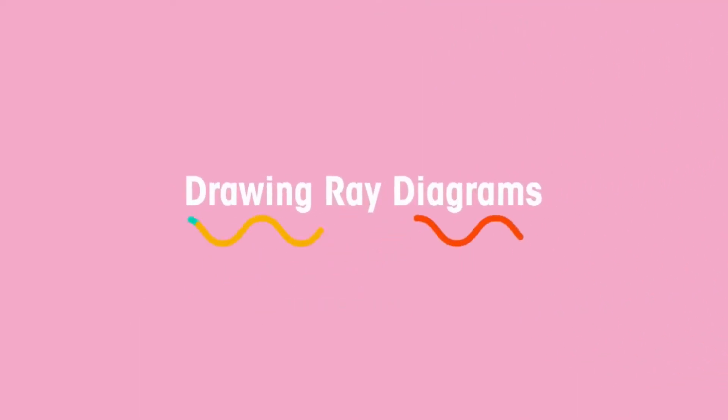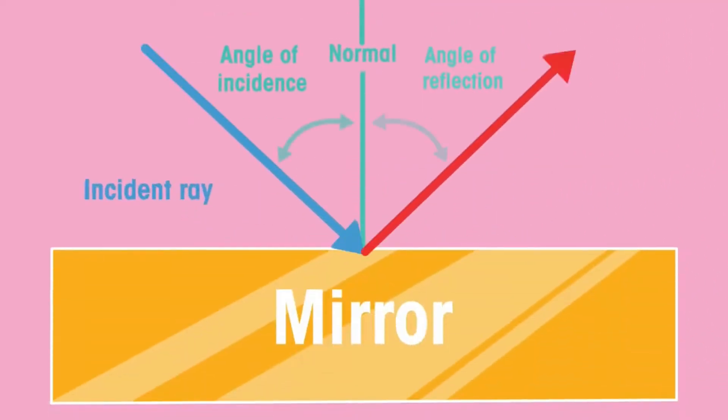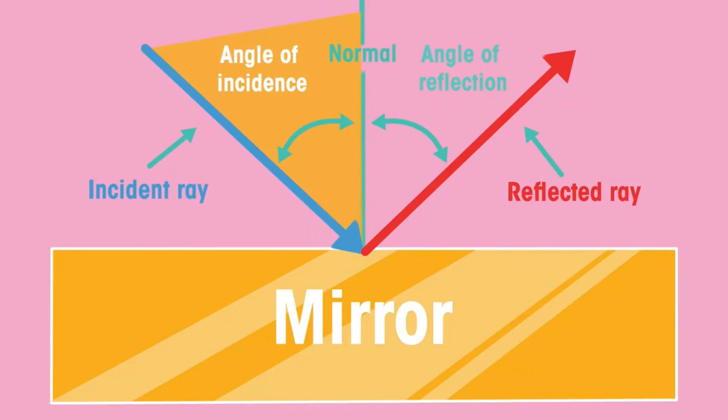When drawing ray diagrams the angle of incidence is always equal to the angle of reflection. The angle of incidence is the angle between the normal and the incoming incident ray.